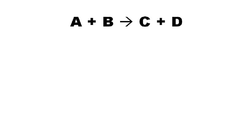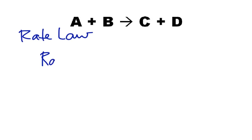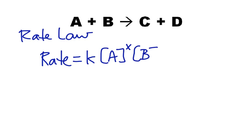Now, if we have a generalized chemical reaction, we want to come up with something called the rate law. The rate law has a really standard look: rate equals K — the specific rate constant — times the concentration of A raised to some power, times the concentration of B raised to some power. Our job is to calculate what that little x is, what that little y is, and what K is. Those are our big ideas.